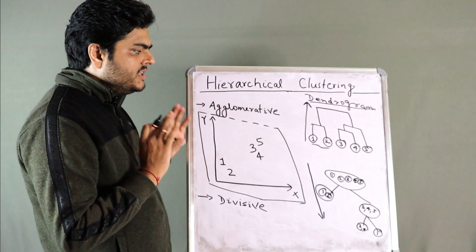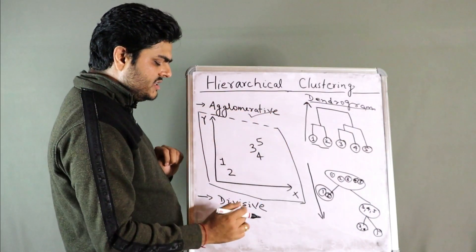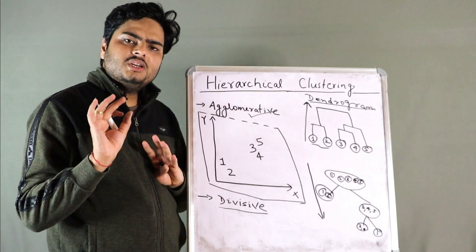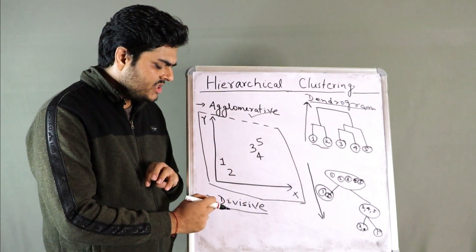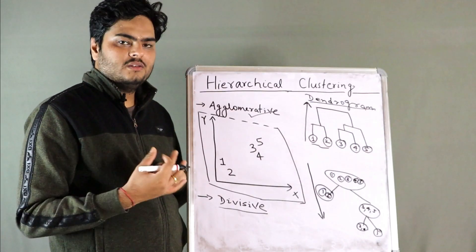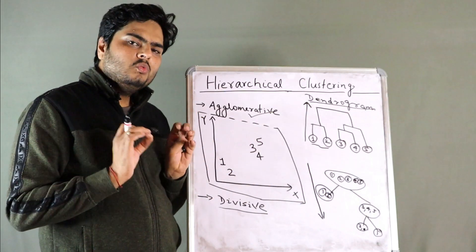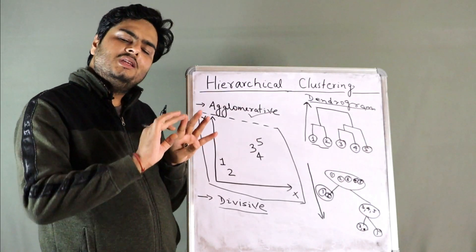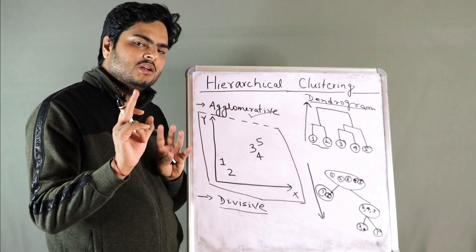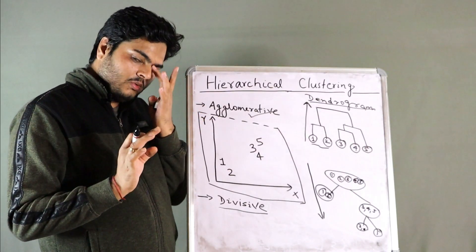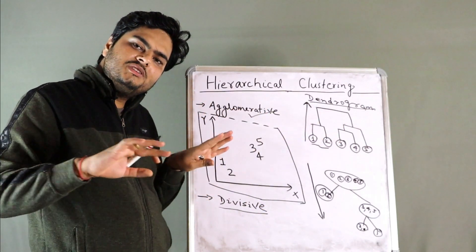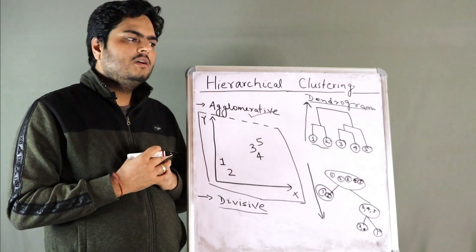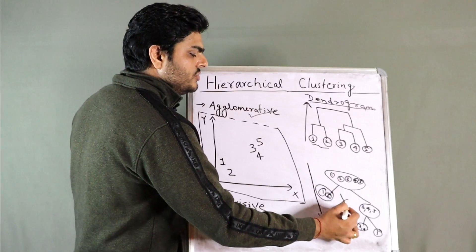In industry, agglomerative clustering is used more, and divisive clustering is used less. The reason is the underlying assumption. In divisive clustering, the assumption is that all data points behave similarly — that is why there is one big cluster in the beginning. This is relatively less realistic. For example, there are one million customers of Flipkart — is it a good assumption that all customers are one? Practically, no. In agglomerative, we assume all customers are different and then try to merge them, which is why it is more popular from an industry point of view.